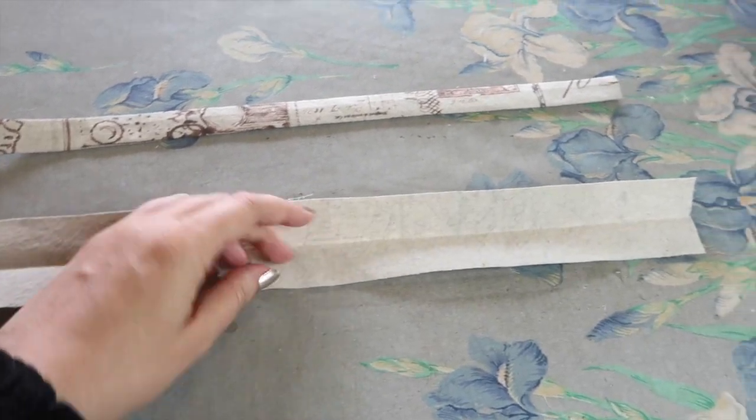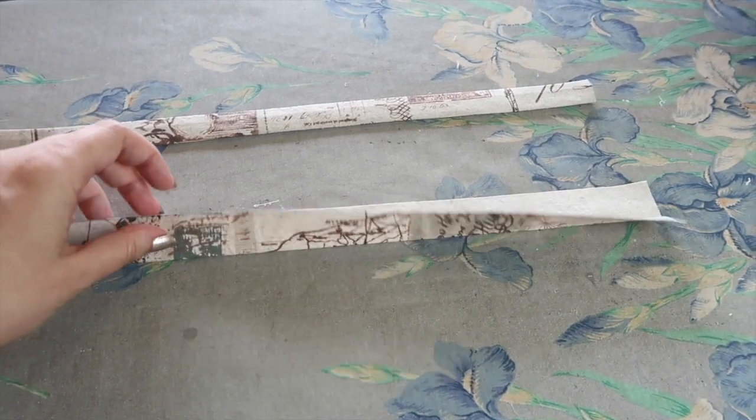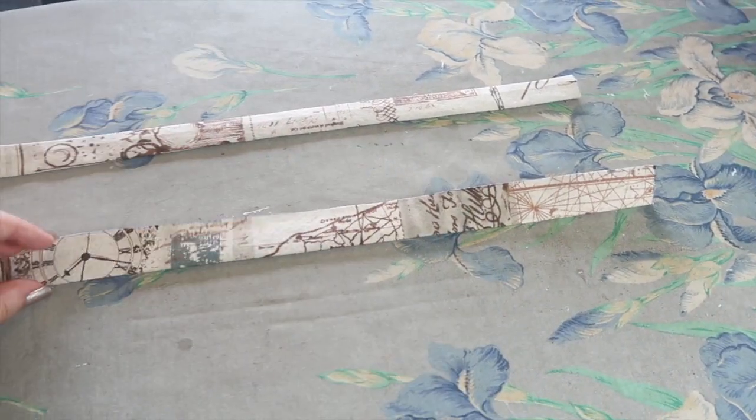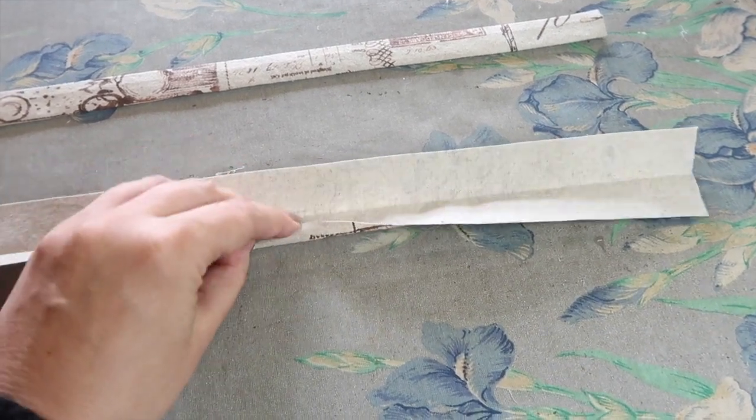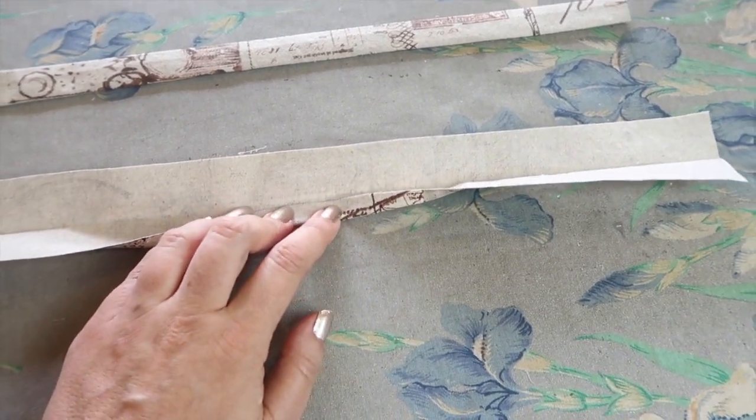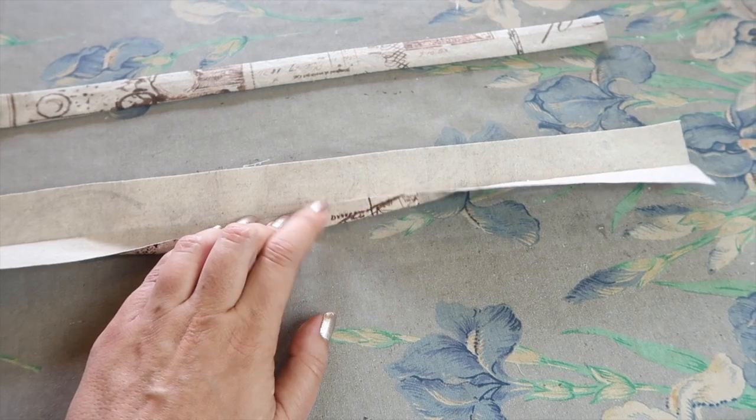So the first thing you want to do is take your 24-inch strip, which is two inches wide, and press it in half like this. Once you've done that, you're then going to take one edge and fold that up so it meets that crease line that you've just done and press that the whole way along. So we're going to do that next.